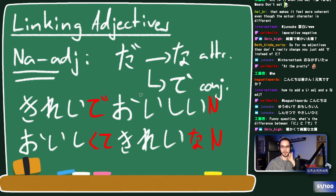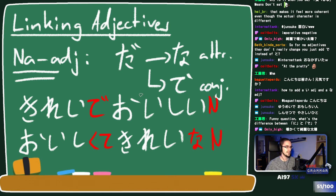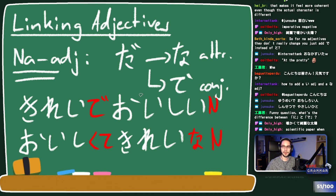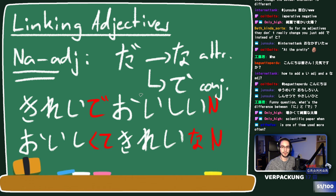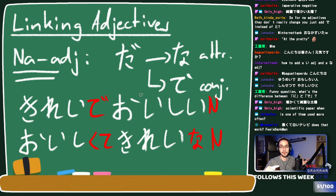For example, atatakakute kirei na taiyo - a warm and beautiful sun. I've asked Japanese speakers in the past whether it's better to have one type first or the other, and I've looked it up - there doesn't seem to be a rule or a preferred order. Sentences like kirei de oishii and oishikute kirei both seem equally valid and equally used.